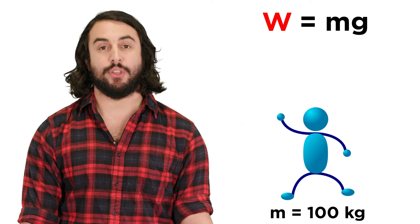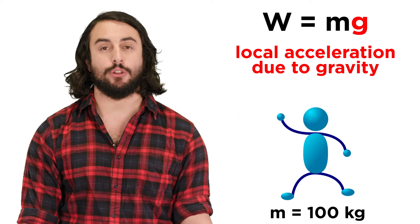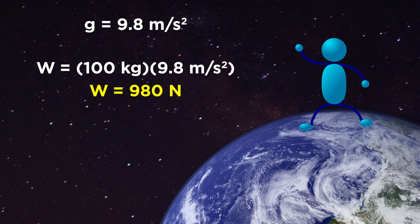But the weight of the person will depend on their location. On the surface of the Earth, the acceleration due to gravity is 9.8 meters per second squared, so their weight will be 980 newtons.